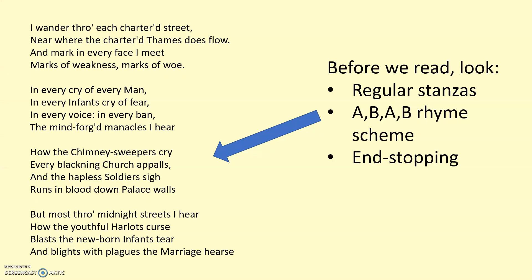Before going through stanza by stanza, look at the poem as a whole — its form or structure, the way it's laid out on the page. You've got regular stanzas of four, four, four, four lines. Within those stanzas you've got an ABAB rhyme scheme, where every other line rhymes — so 'street' and 'meet,' 'flow' and 'woe' — and that repeats all the way through. There's regular end-stopping as well with commas and full stops. Ask yourself why: it's almost like we're trapped in this form, just like the people in the poem are trapped in their place in society. That regular rhyme scheme reflects that regular life where they are stuck — being trapped is a good word to use.